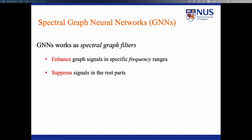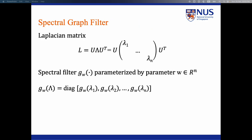Spectral graph neural networks are well known for their applications in graph-related tasks. They can enhance graph signals in specific frequency ranges and suppress signals in the rest parts. They are defined by utilizing Laplacian matrix L on graphs. When we try to obtain the desired graph filters, we apply a function g_w, where w is the parameter, to the eigenspace of Laplacian matrix.